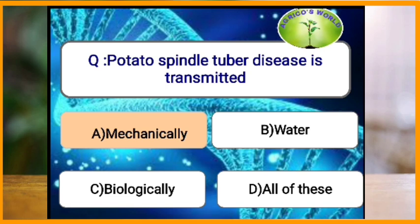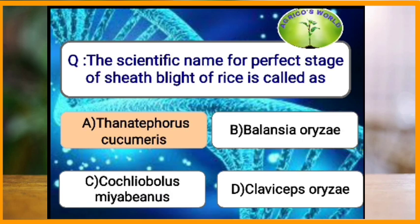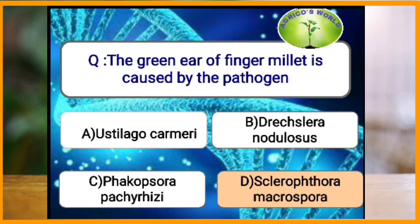Potato spindle tuber disease is caused by the viroid, that is potato spindle tuber viroid, and it is the first discovered viroid. The potato spindle tuber disease is transmitted mechanically. The scientific name for the perfect stage of sheath blight of rice: sheath blight of rice is caused by Rhizoctonia solani and its perfect stage is Thanatephorus cucumeris.